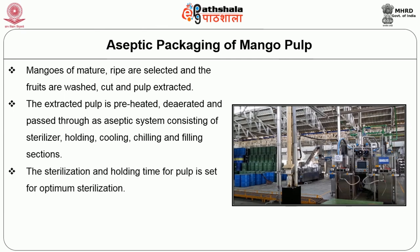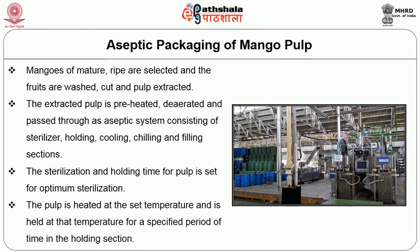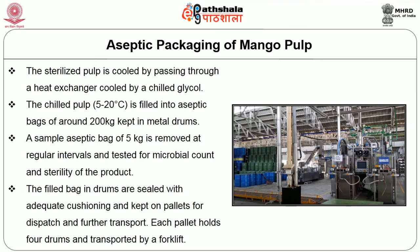The sterilization and holding time for pulp is set for optimum sterilization. The pulp is heated at the set temperature and held at that temperature for a specified period of time in the holding section. The sterilized pulp is cooled by passing through a heat exchanger cooled by chilled glycol. The chilled pulp is filled into aseptic bags of around 200 kg kept in metal drums. A sample aseptic bag of 5 kg is removed at regular intervals and tested for microbial count and sterility. The filled bags in drums are sealed with adequate cushioning and kept on pallets for dispatch and transport. Each pallet holds 4 drums and is transported by a fork lift.